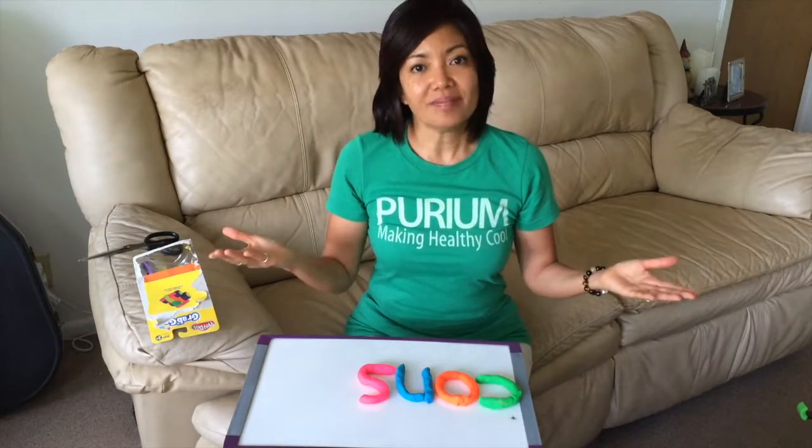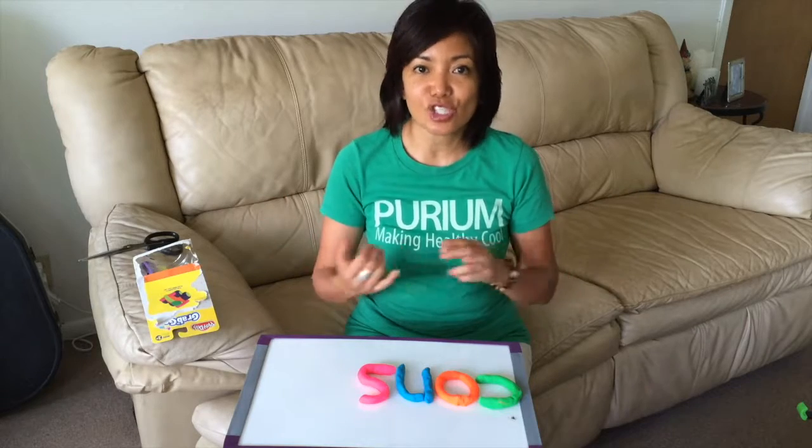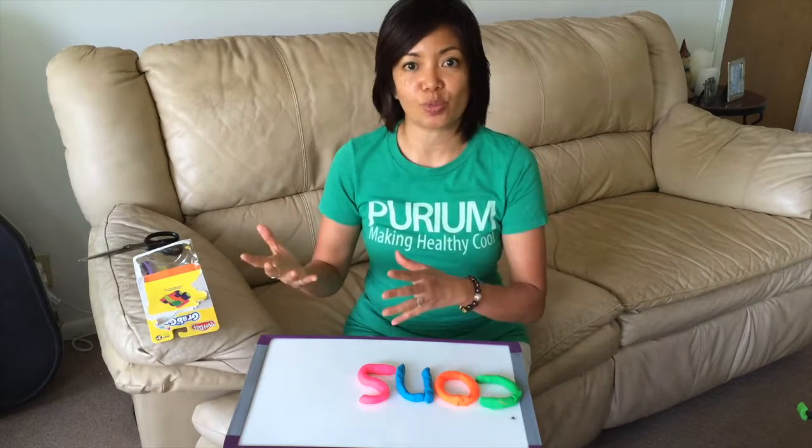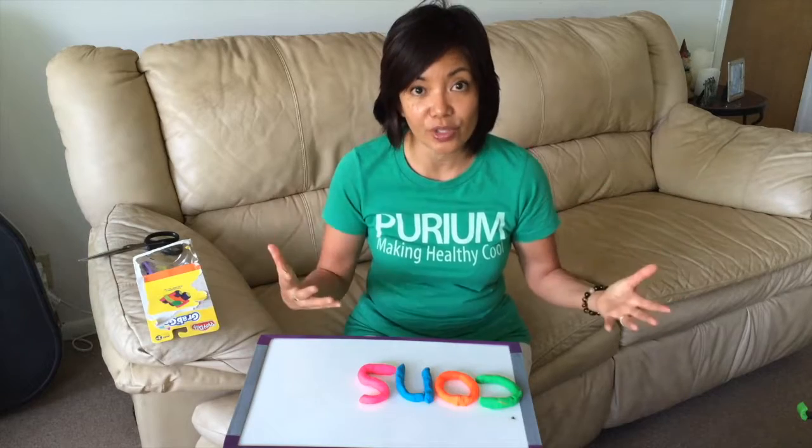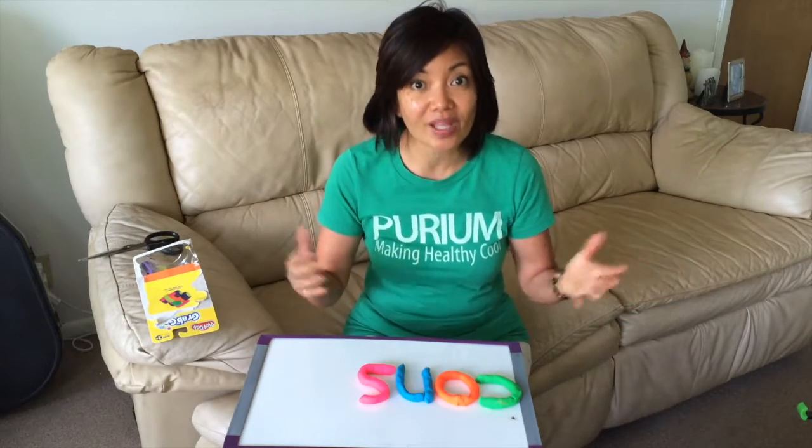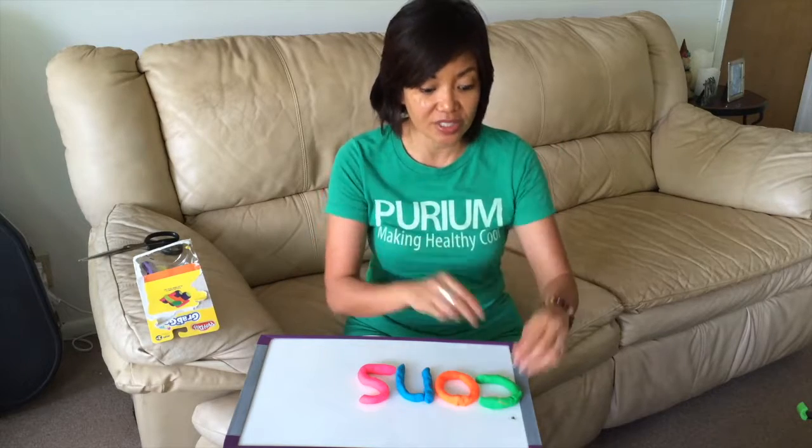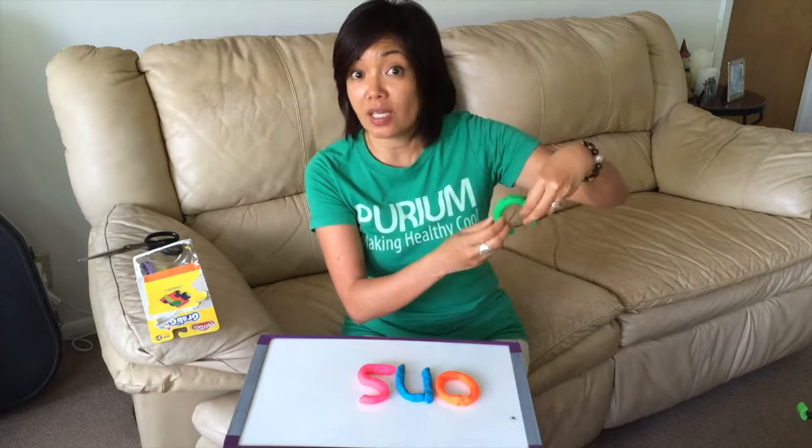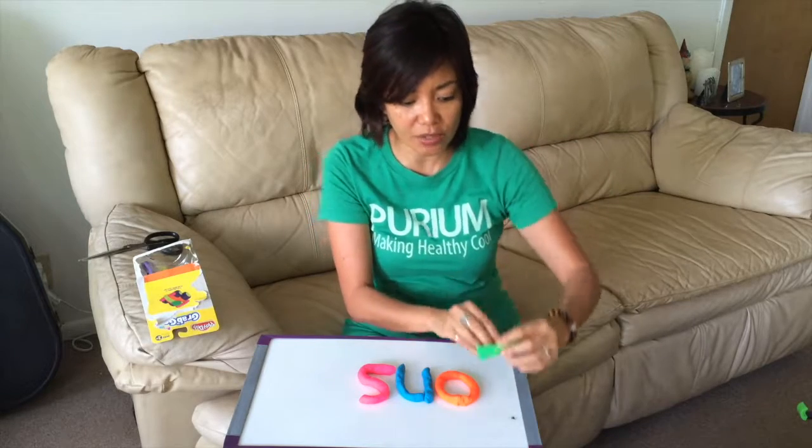Alright, so you come in into the Purium family as an associate. Then you become a builder when you start buying your own products for yourself to get healthier. Then the next major big-time rank advancement is the consultant. So associate A, B builder, C consultant.